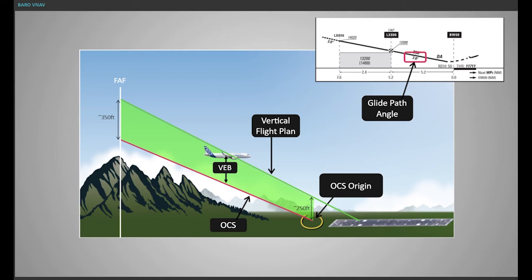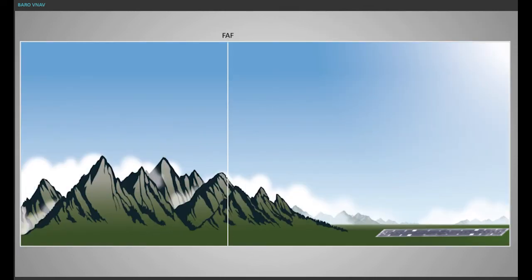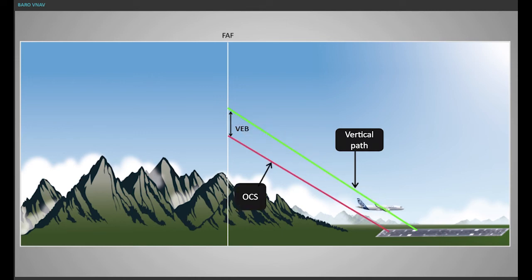The vertical error budget is provided after the final approach fix, down to 250 feet close to the runway. For RNP AR, a vertical error budget is provided after the final approach fix.